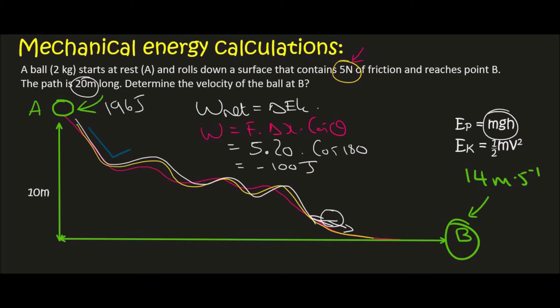So the object has 196 joules at A. It loses 100 joules due to friction. And so at B it should have 96 joules of energy.